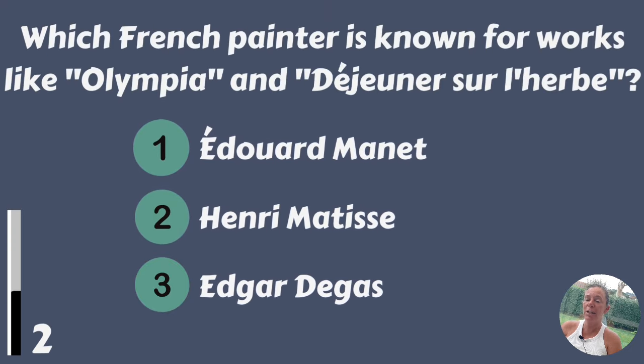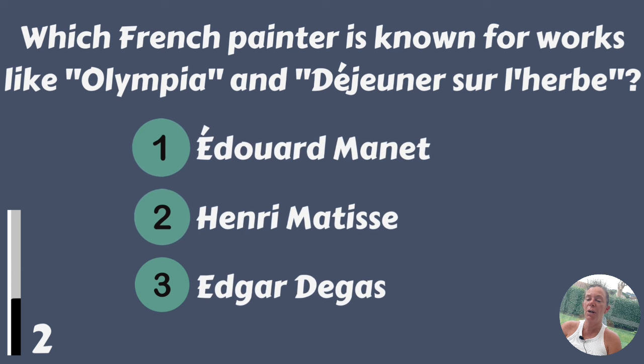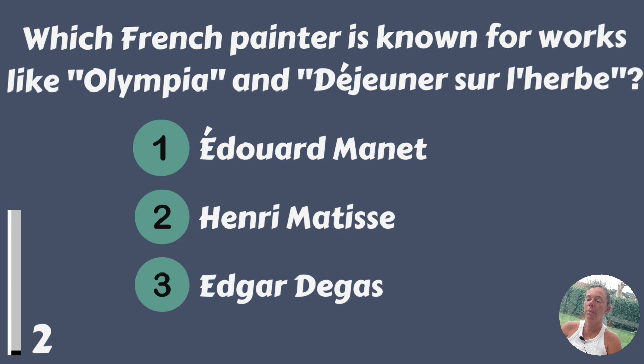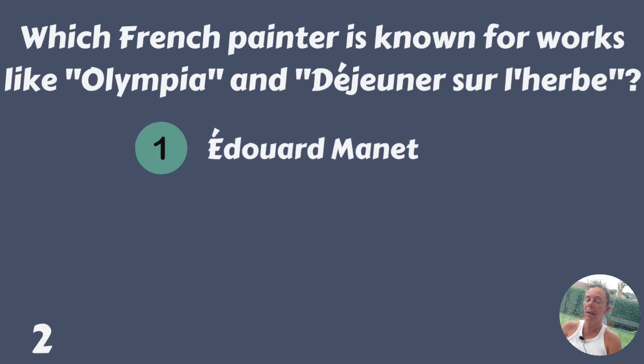Which French painter is known for works like Olympia and Déjeuner sur l'herbe? Edouard Manet, Henri Matisse or Edgar Degas? Edouard Manet.